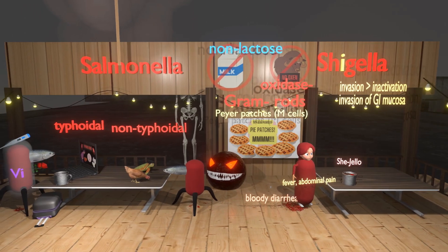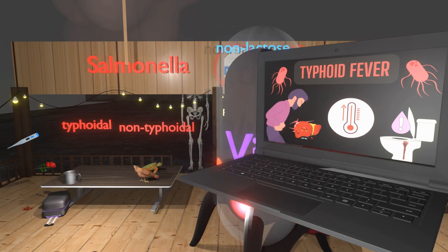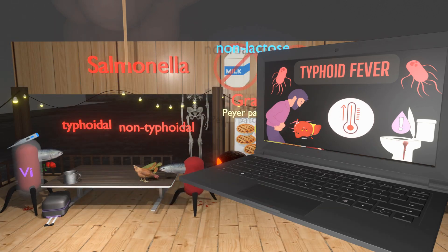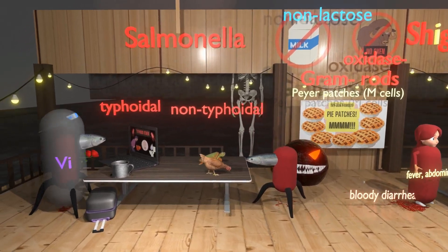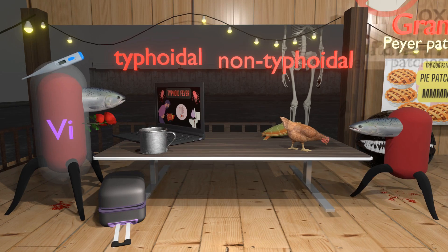Now let's move on to Salmonella. The typhoidal type is represented by a pathogen typing on a computer. The typhoidal type has a Vi capsular antigen — a virulence factor that inhibits neutrophil recruitment and phagocytosis, limiting the acute inflammatory response. Instead, the bacteria undergoes unchecked intraphagocytic replication, resulting in typhoid fever. A thermometer going up shows that fever in typhoid fever generally increases over the course of the day, and roses remind us of the rose spots seen in typhoid fever. Transmission is through contaminated drinking water and food, especially seen in travelers, represented by a suitcase.